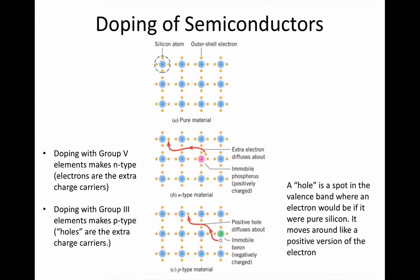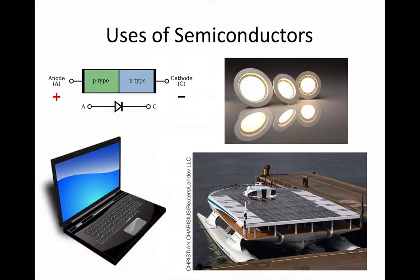Their solution was to add small amounts of other elements to pure silicon, which added extra charge carriers and changed its resistivity. This process was called doping. Small amounts of group 3 elements like boron made P-type semiconductors, and group 5 elements like phosphorus made N-type semiconductors. Putting a block of each type together made a device called a diode, which acts as a one-way gate for current. Other devices include the transistor, which is an adjustable switch and amplifier — the basic unit of all semiconductor computers — as well as light emitting diodes, or LEDs, and solar cells.